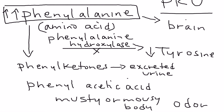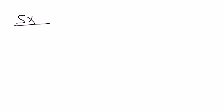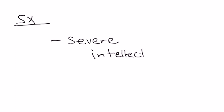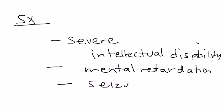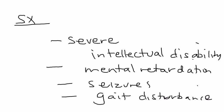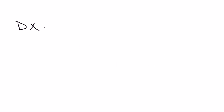Children with PKU are usually normal at birth, but they can then develop severe intellectual disability and mental retardation. This brain damage can also lead to seizures, and the child may also present with gait disturbance.